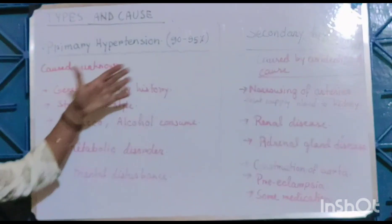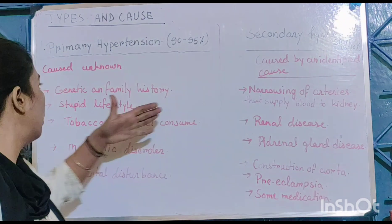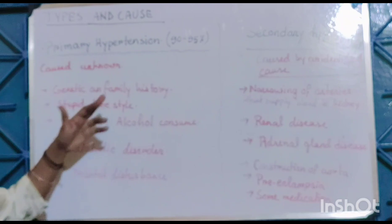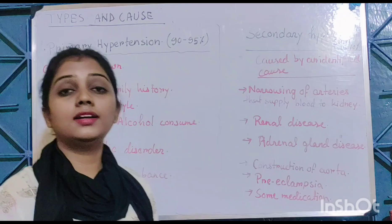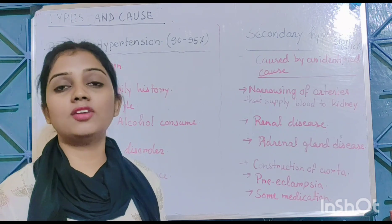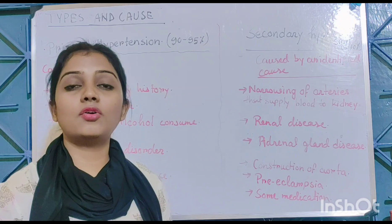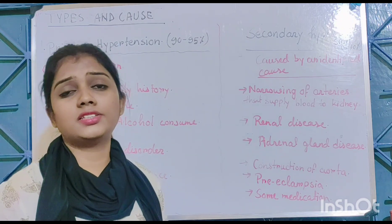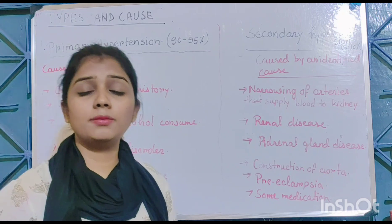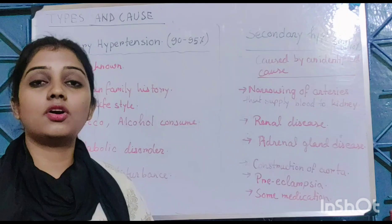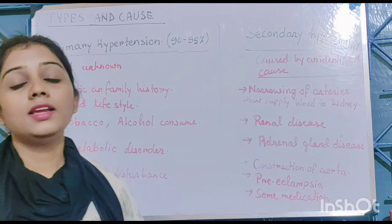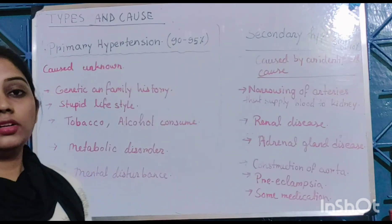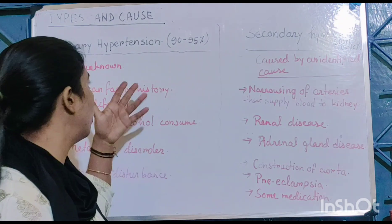Primary hypertension has no known cause, but common contributing factors include genetic and family history, irregular lifestyle, lack of exercise or over-exercise, over-eating, illegal drug intake, tobacco and alcohol consumption — which play a very vital role — and metabolic disorders.